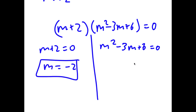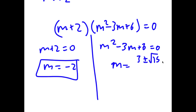From m squared minus 3m plus 6 equals 0, we have to use the quadratic formula. You should get that m is equal to 3 plus or minus the square root of 15i, all over 2.